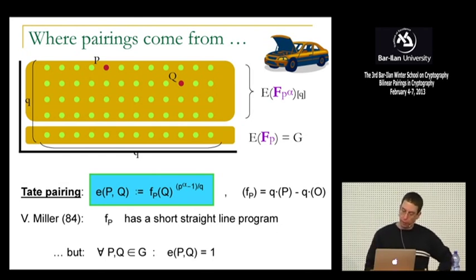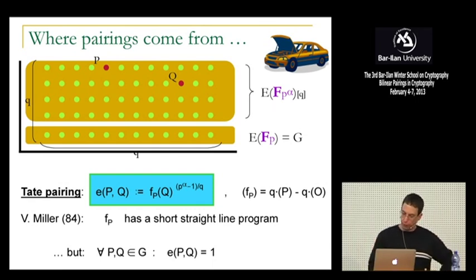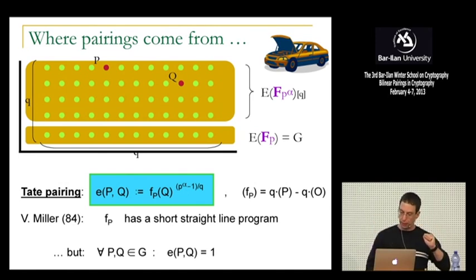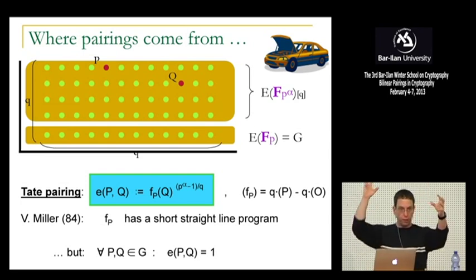What is the pairing itself? Take two points P and Q on the Q-torsion. The pairing of P and Q is some function F_P applied to the point Q — a function defined by P, evaluated at Q. All pairings in math come from this duality: one side defines a function, the other side is the input, and the pairing is function evaluation. For example, an inner product is a linear functional applied to a vector — that's also a pairing.